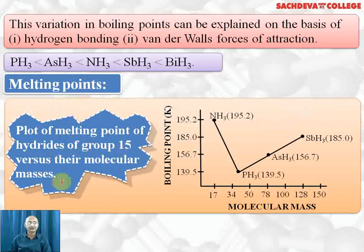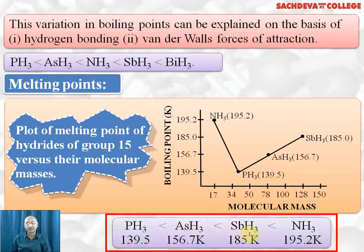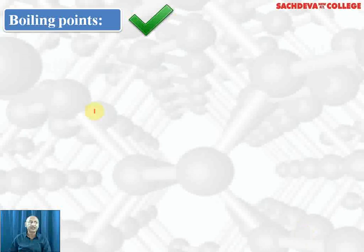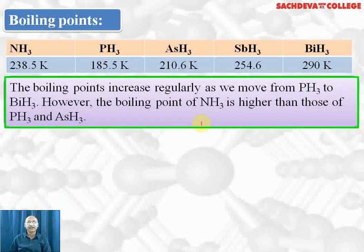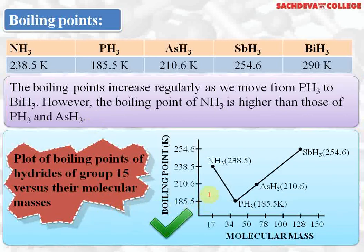Melting points: ammonia has the highest melting point at 195.2 K; it decreases to phosphine and after that goes on increasing until antimony hydride at 185 K. Boiling points: ammonia is 238.5 K; phosphine is lowest, then arsine, then ammonia comes in between, then stibine and bismuthine. The boiling point increases regularly from phosphine to bismuthine. However, the boiling point of ammonia is higher than phosphine and arsine because of intermolecular hydrogen bonding.